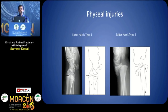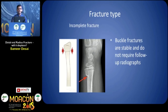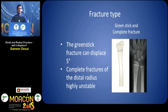Physeal injuries are usually Salter-Harris type 2 and they do well with closed reduction. Incomplete fractures — buckle fractures are stable and do not require follow-up. However, you should be aware that a greenstick fracture can displace up to 5 degrees, and complete fractures of the distal radius are highly unstable. Hence you must follow them up if you have done a simple closed reduction.